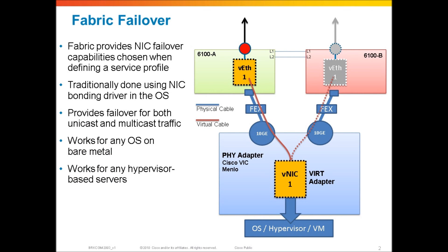Let's talk about Fabric Failover. Fabric Failover is a very unique capability in UCS and it provides fabric level high availability to an adapter used by an OS, a hypervisor, or a VM. And why it's unique? It's unique because we're leveraging the capability that UCS has in virtualizing every component of the infrastructure.